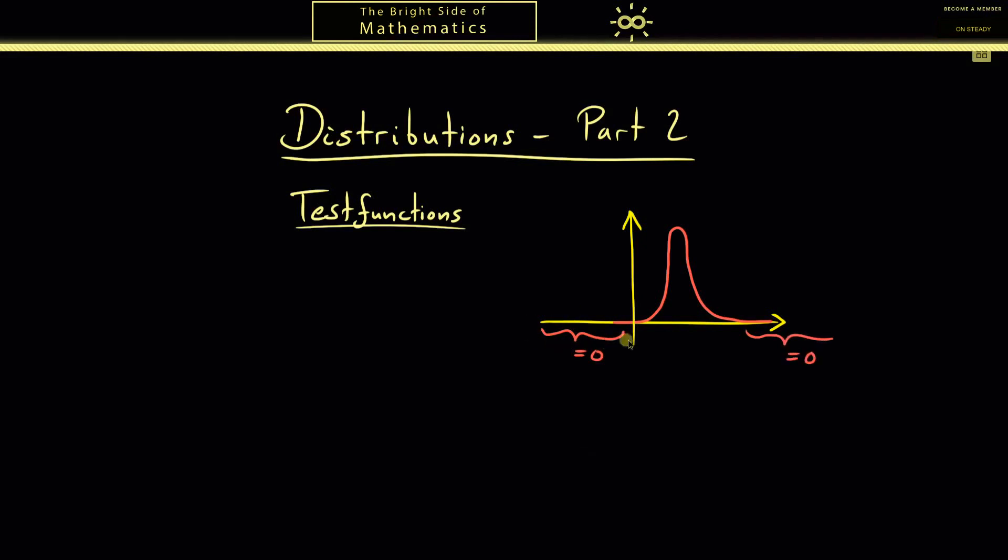To this point everything we considered was one dimensional, which means the function has only one variable, but now I want to consider all functions with n variables. In other words, we have a function φ that maps R^n to R. Indeed, we could also choose the complex numbers on the right hand side. This does not change so much as we can see later.